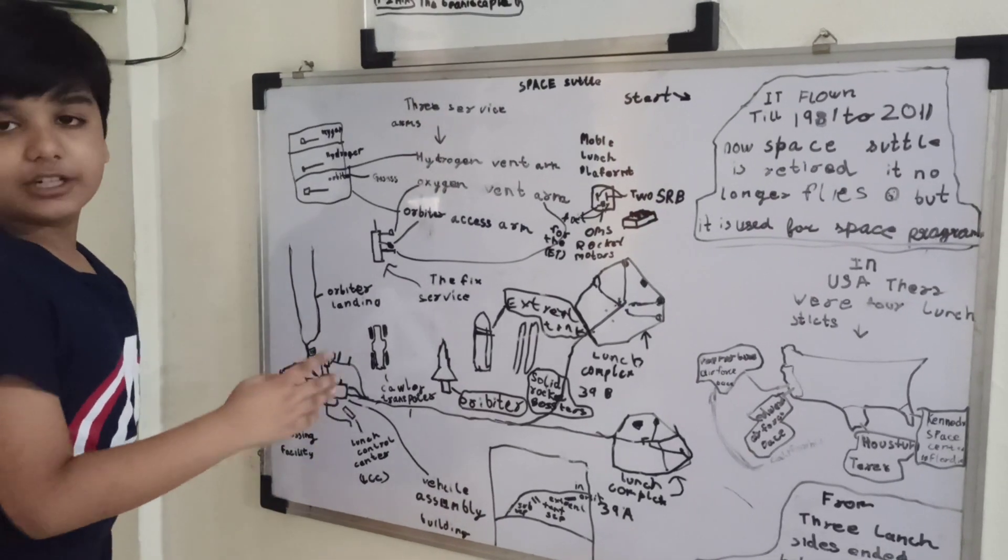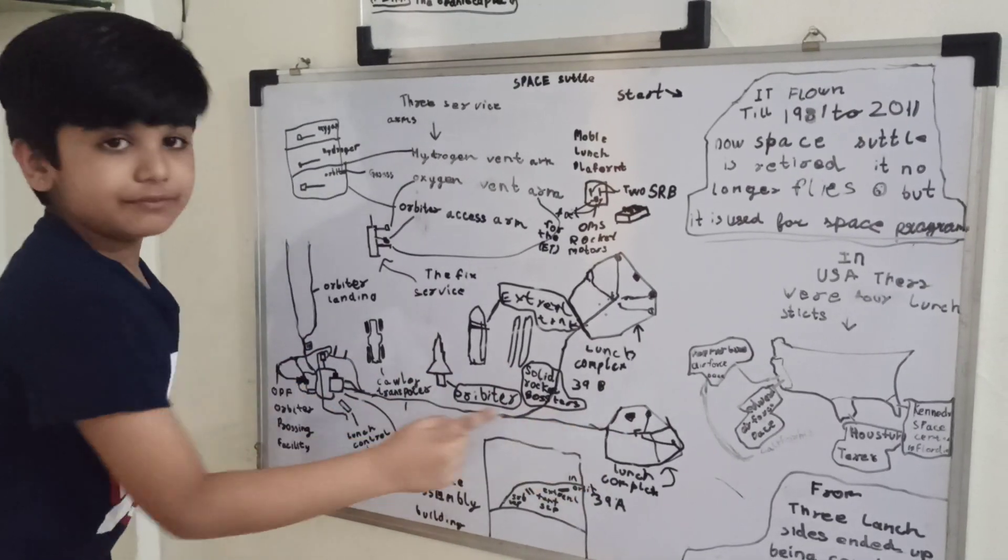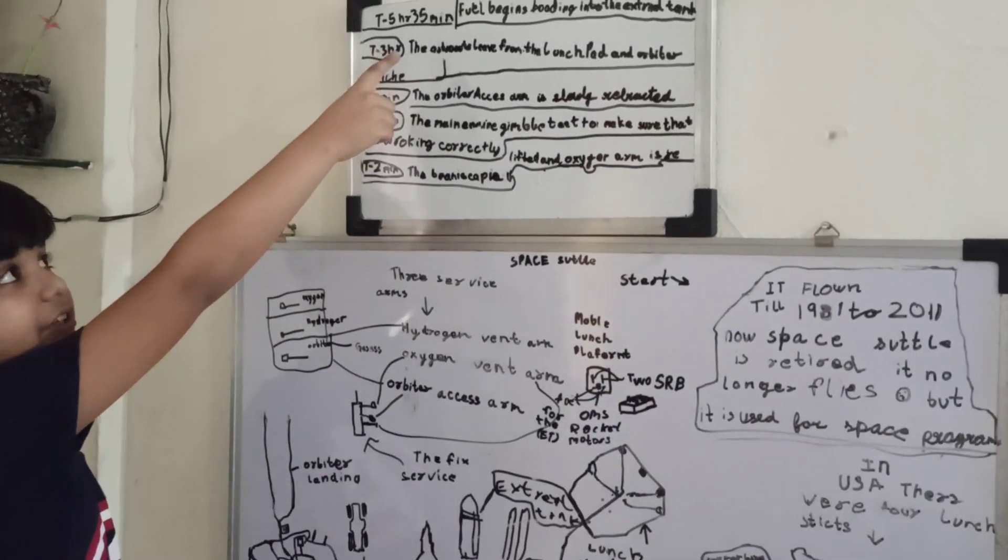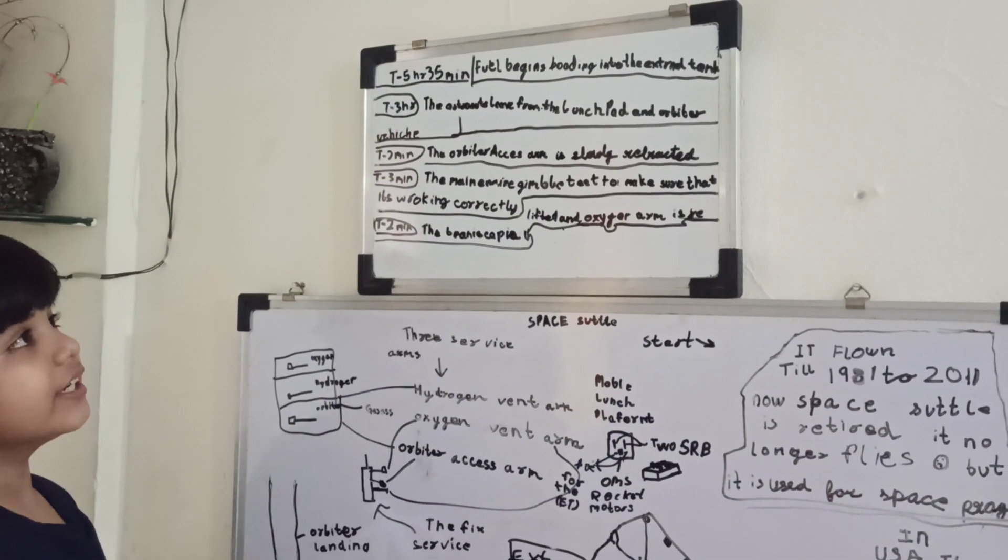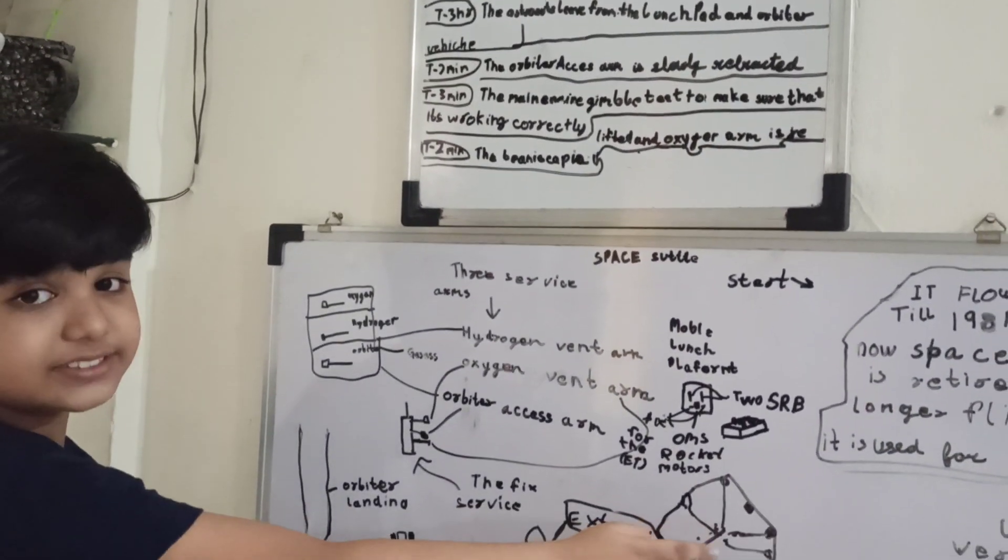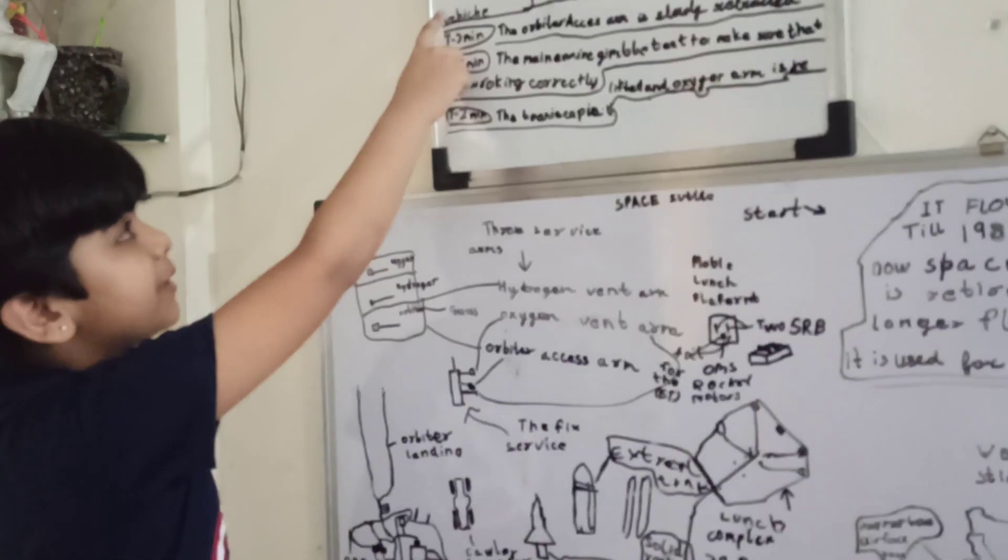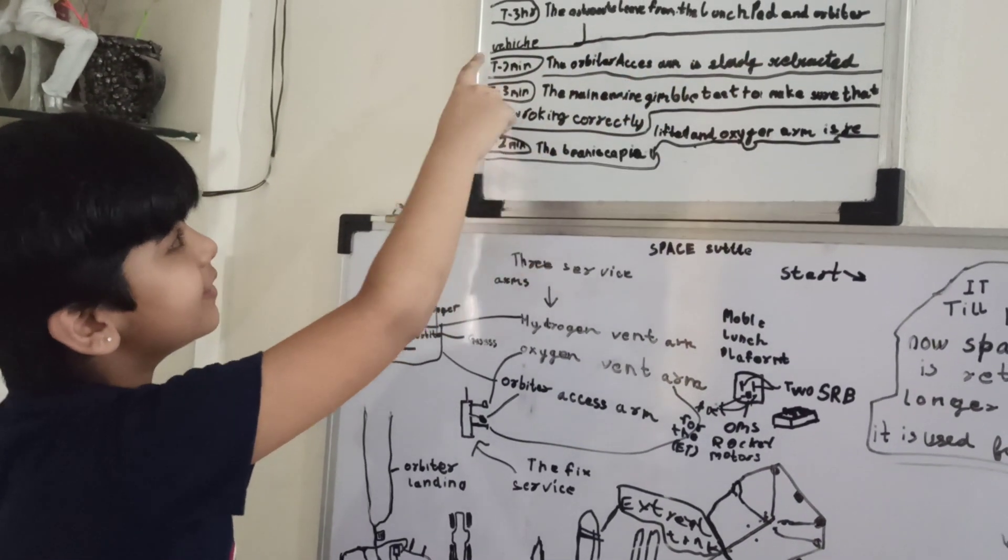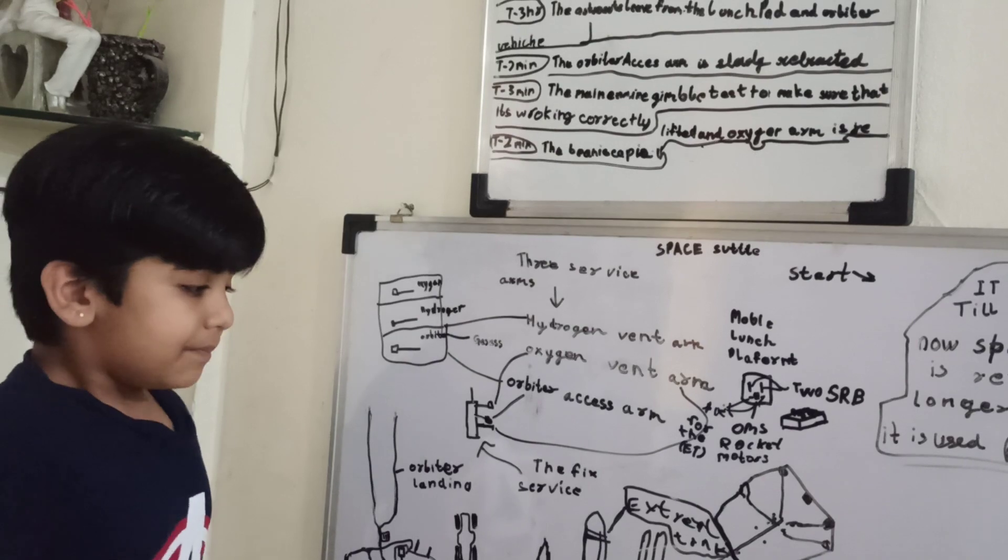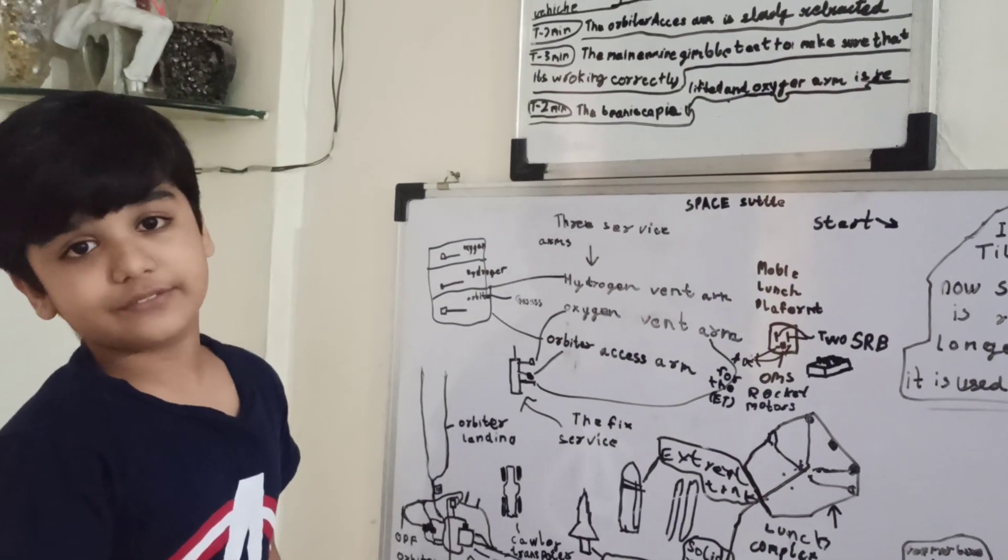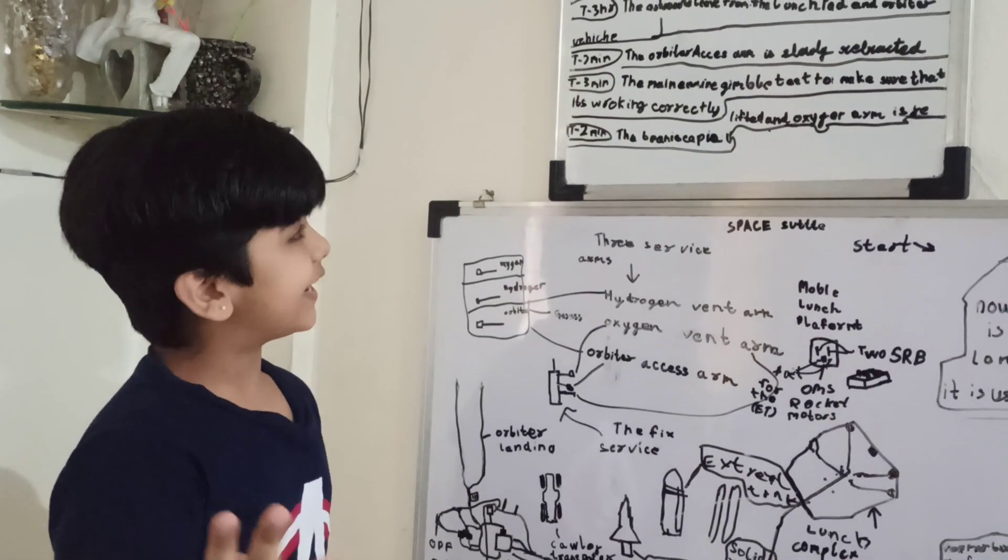Now we have learned about it, and now the countdown starts. T minus 5 hours and 35 minutes, fuel begins loading into the external tank. The fuel comes from the white vehicle tanks. At T minus 3 hours, the astronauts leave from the launch pad and enter the orbiter vehicle. During most missions there are six or sometimes seven, three on the mid deck, four on the flight deck.